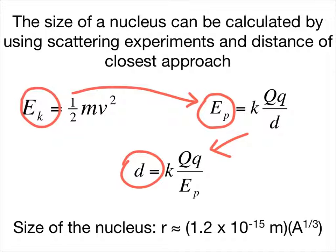The size of the nucleus depends upon the atomic mass number A, and it's approximately equal to 1.2 times 10 to the negative 15th meters, multiplied by the atomic number raised to the one-third power.